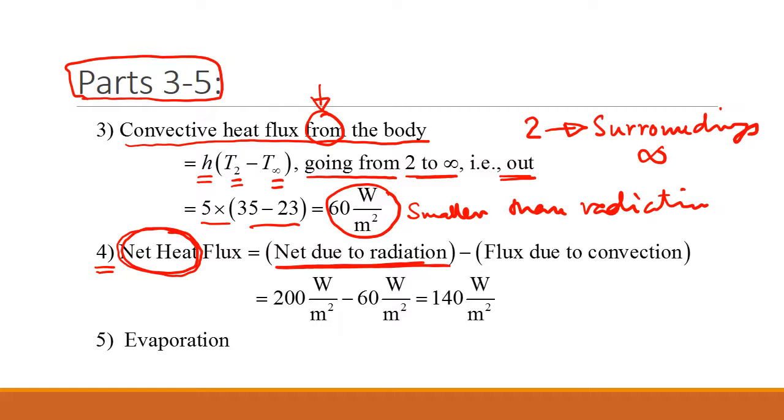We can do net heat flux this way. What is the net amount due to radiation, which we already know is 200 watts per meter square, and then flux due to convection. Notice this is also net because the convection heat transfer is only happening from 2 to infinity. That is like the net amount.